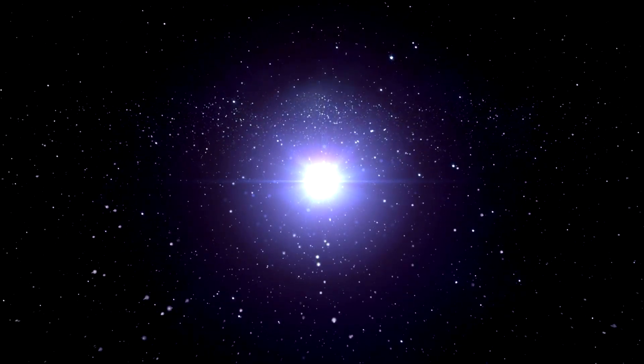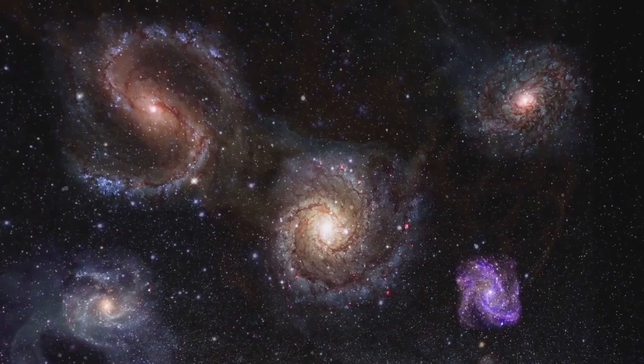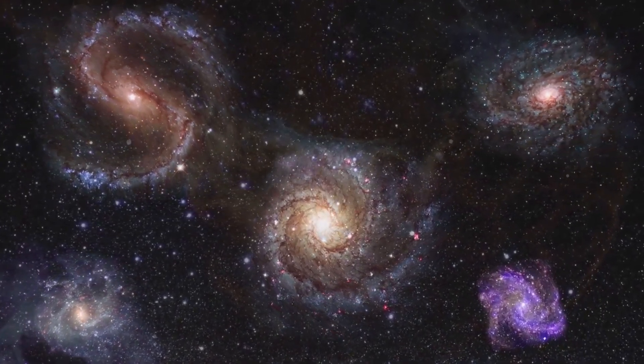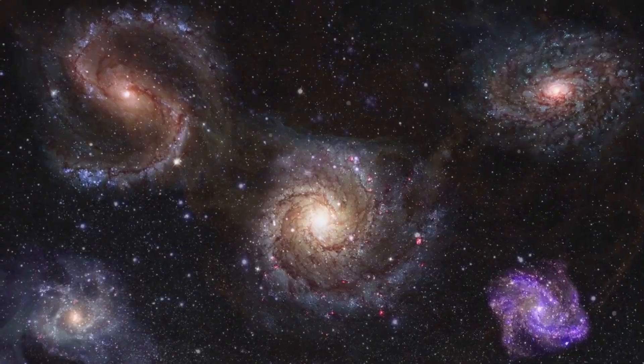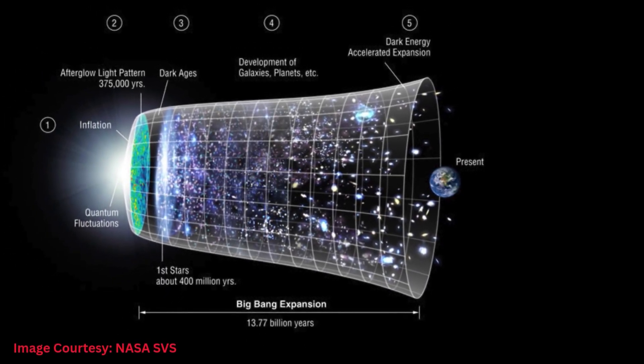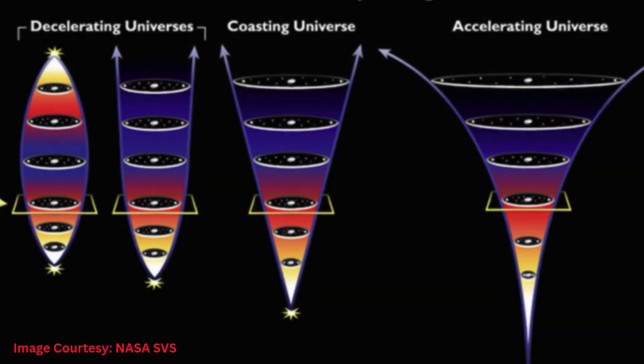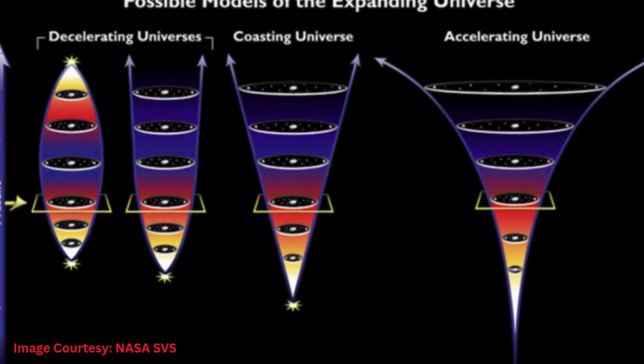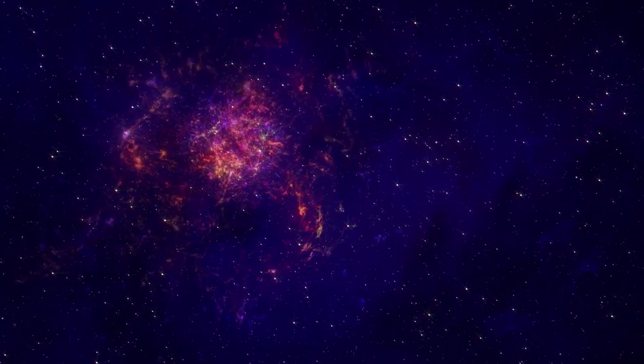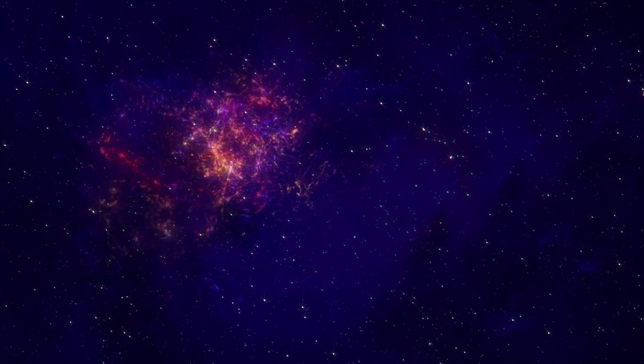So many open questions remain. Are the brightest early galaxies being overestimated in mass or brightness due to lensing or measurement biases? Do current simulation codes have missing physics like gas inflow, cooling, feedback, or star formation efficiencies? How patchy was reionization? Did different regions ionize at different times?